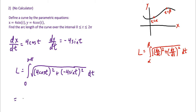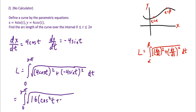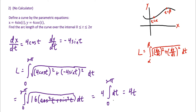Simplifying under the radical, we have 16cos²(t) + 16sin²(t), which factors as 16(cos²t + sin²t). Using the Pythagorean identity cos²t + sin²t = 1, the integral becomes the integral from 0 to 2π of 4 dt. The antiderivative is 4t, evaluated from 0 to 2π, giving 4·(2π) − 0, so the length of the curve is 8π.